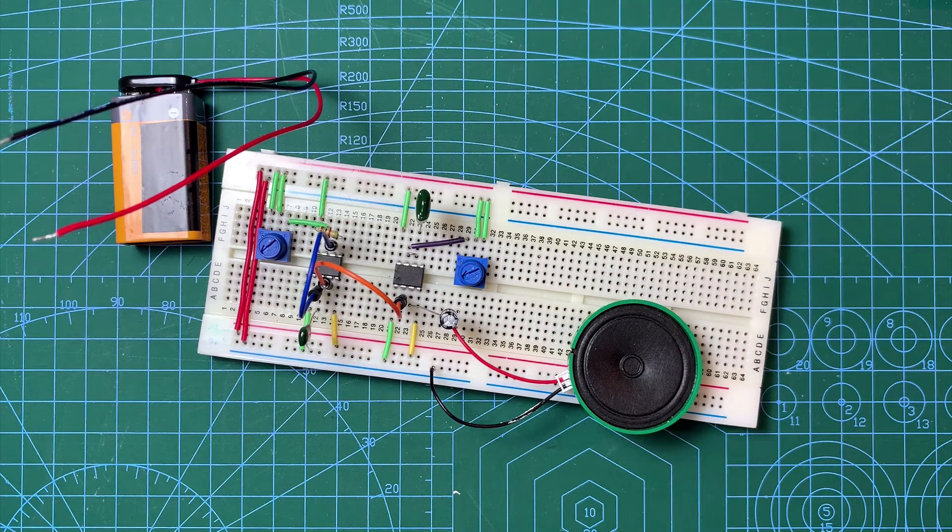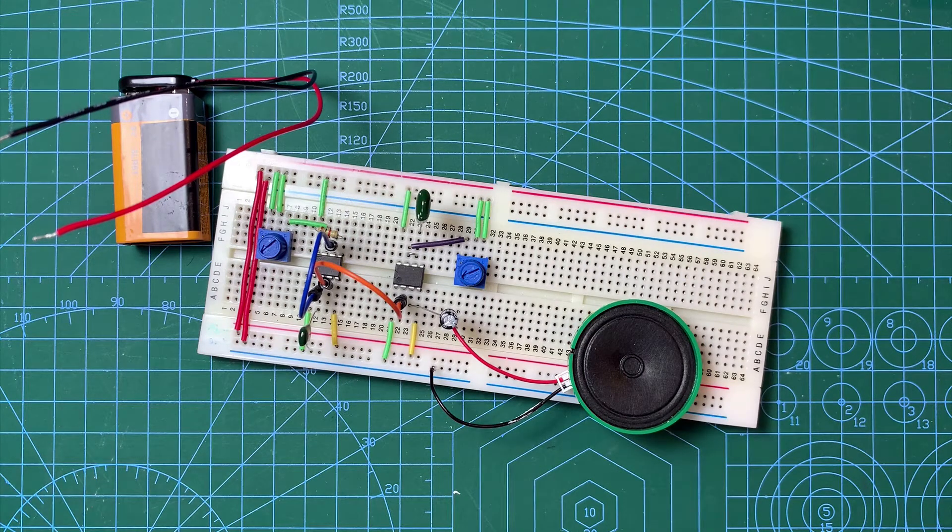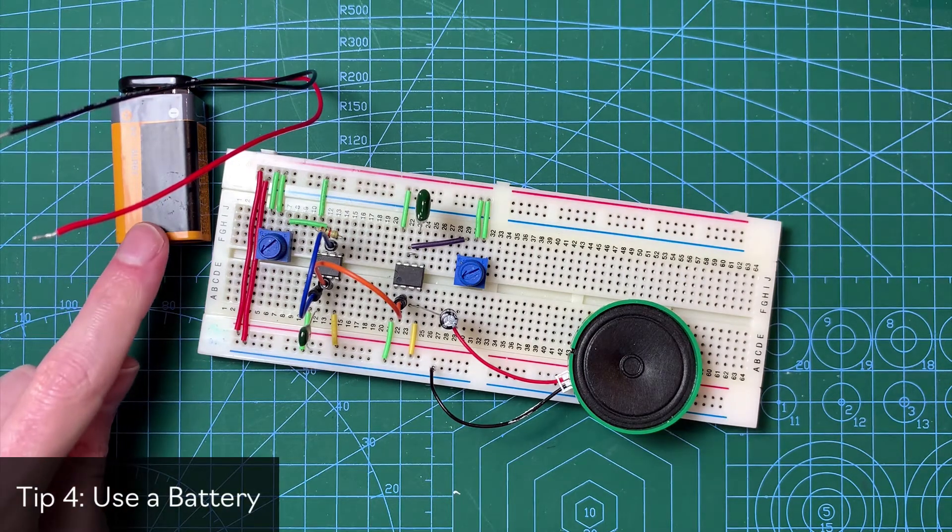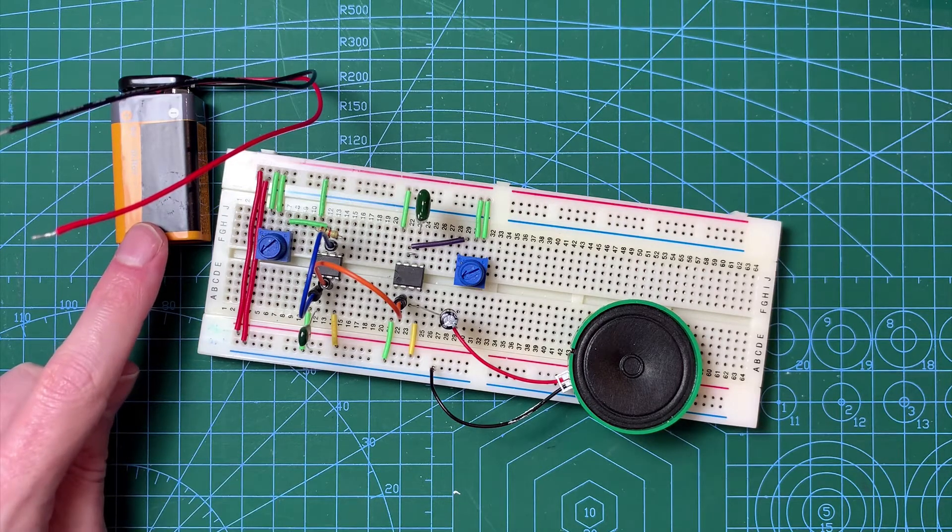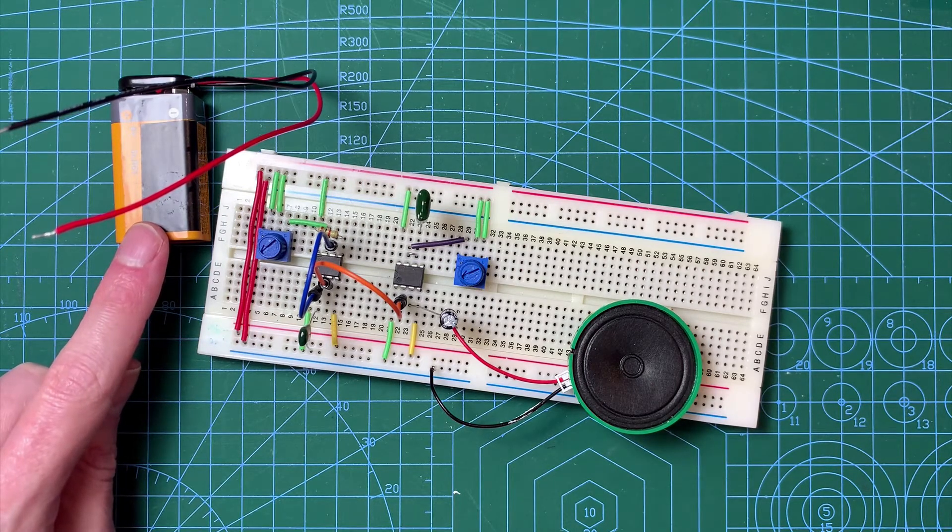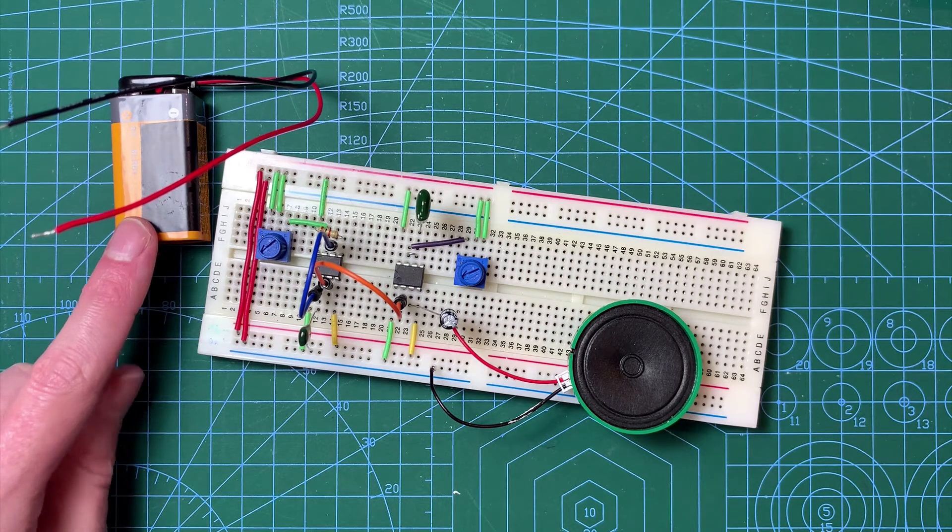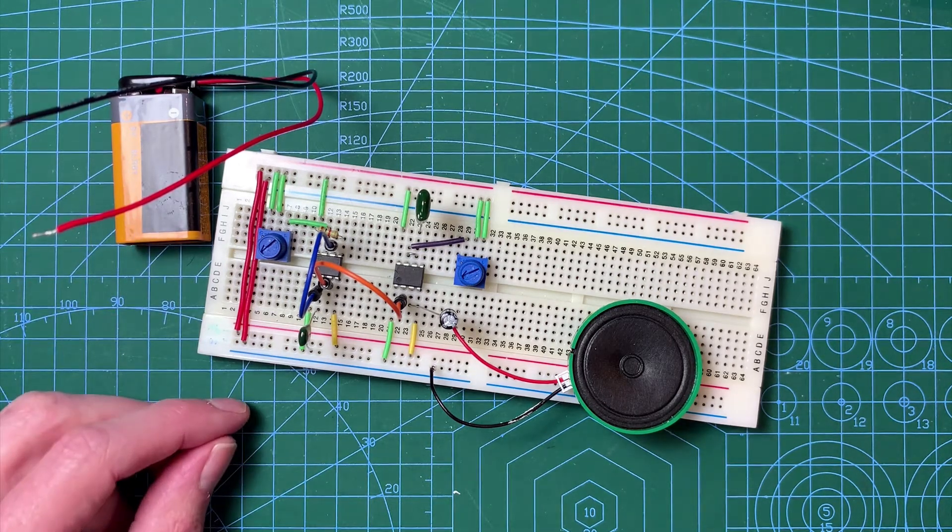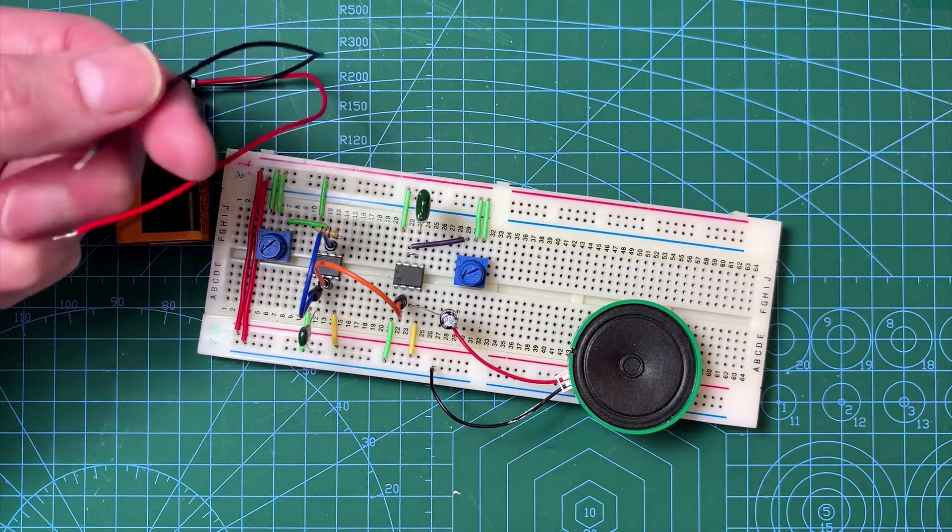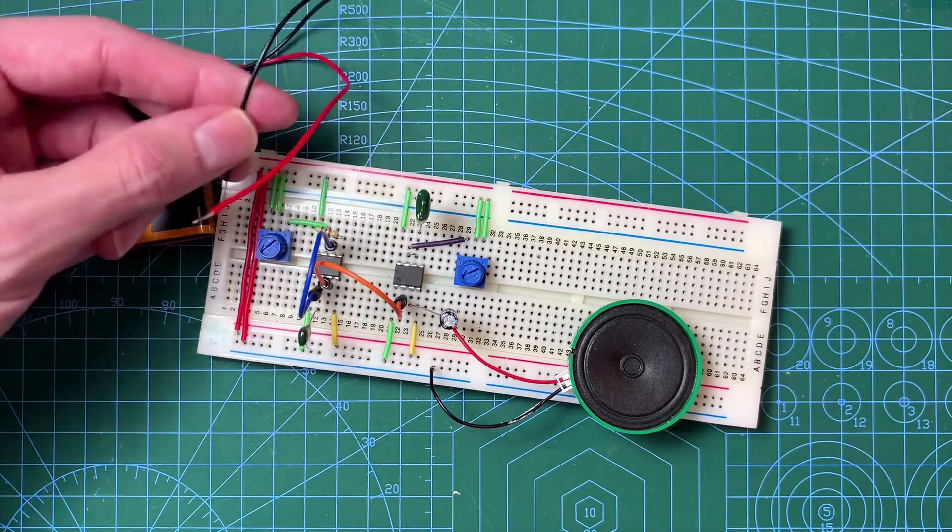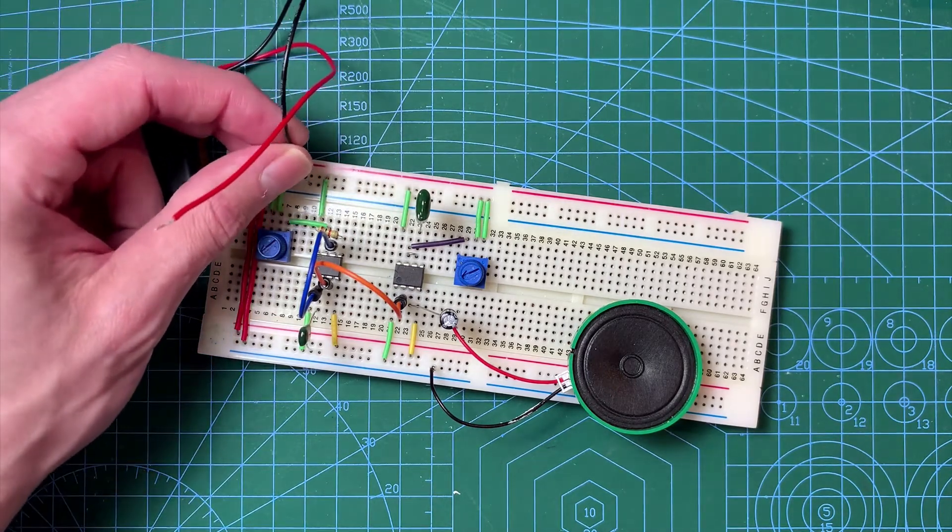When you're first prototyping audio circuits, it's a really good idea to use a battery or batteries to supply the power, as there's only so much current a battery can supply, and therefore you're less likely to damage yourself or the circuit. It's also a good idea to plug in the ground lead first. In my case, I have a negative ground, so that's the black lead, so I would plug in that first.